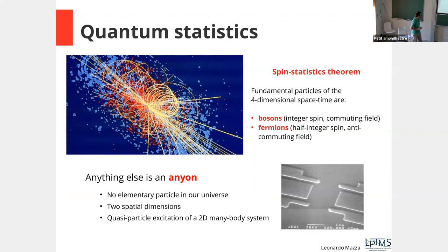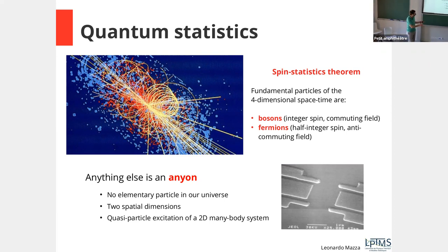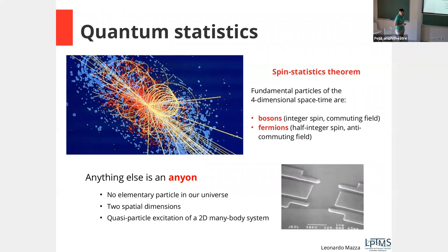Let's take it from far outside. The spin-statistics theorem tells us that fundamental particles in four-dimensional spacetime are either bosons or fermions. Bosons are described by commuting fields, fermions by anti-commuting fields. Anything else is an anyon. The spin-statistics theorem says you won't find anything else as an elementary particle — but people found a loophole in the proof of this theorem.